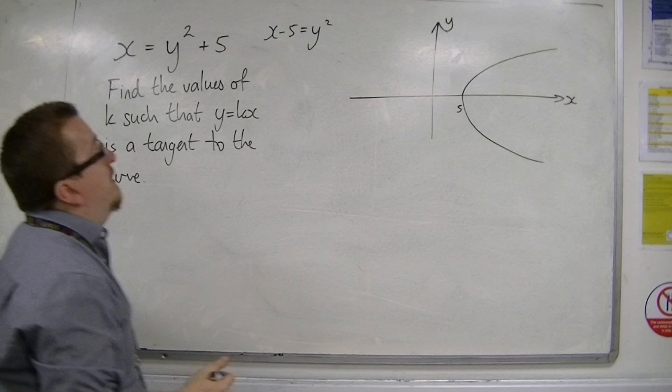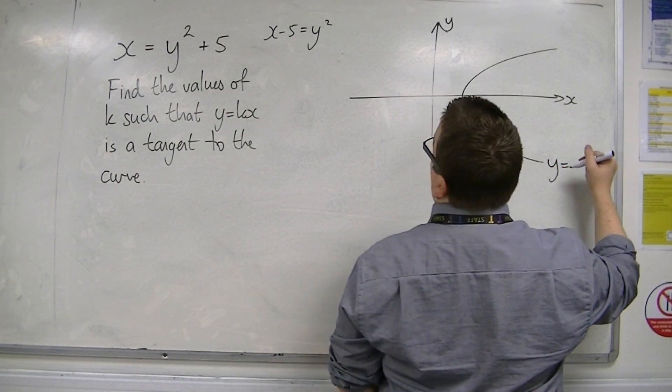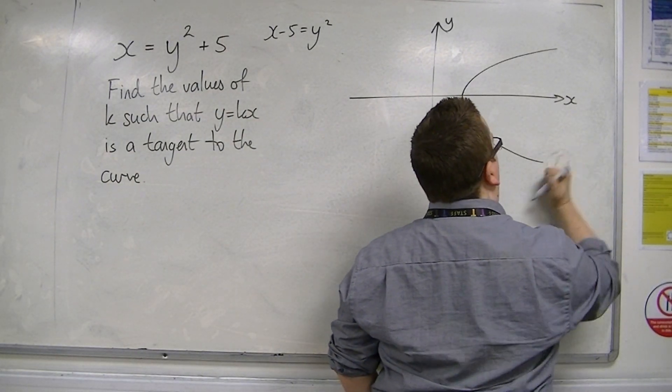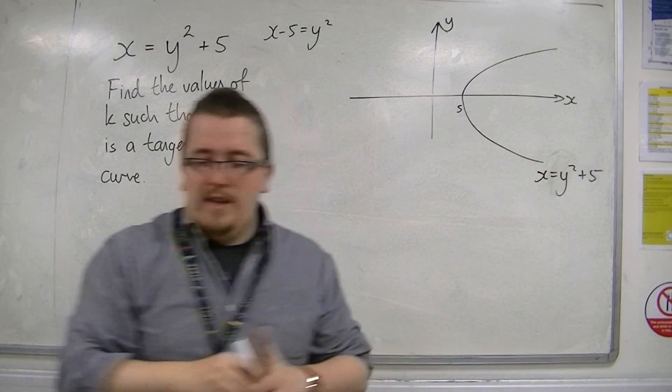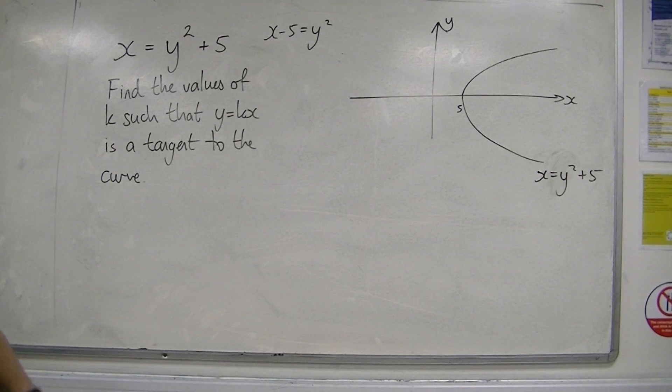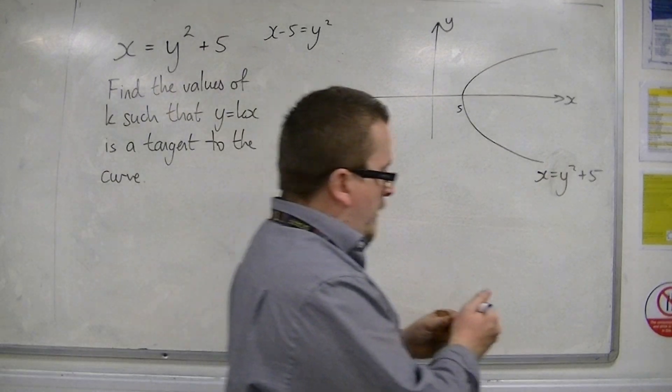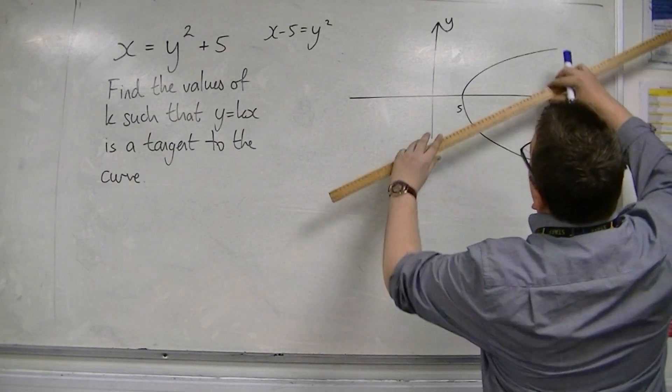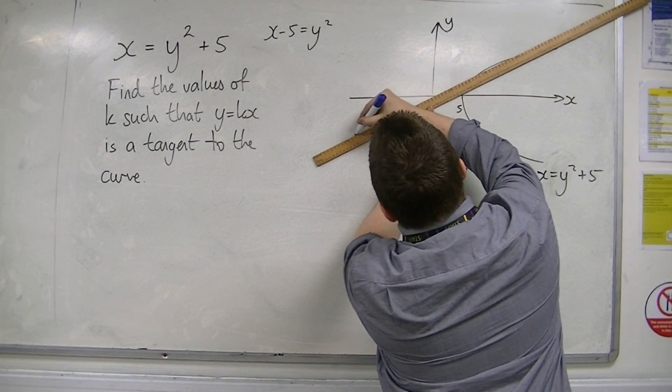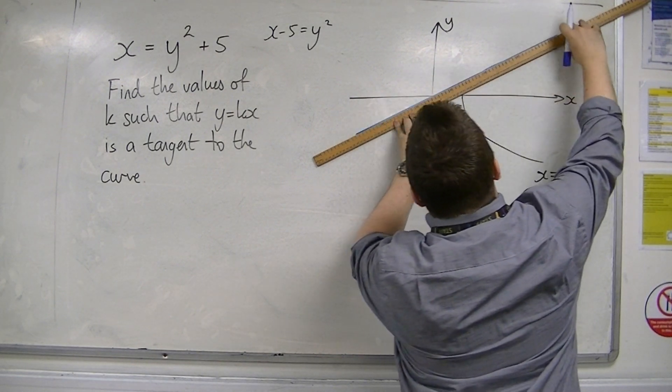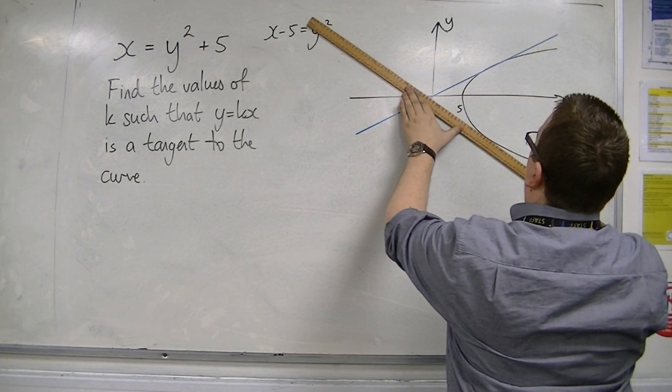So this is my curve, x is equal to y squared plus 5. Now, what we're looking at are equations y is equal to kx. So they are equations that go through the origin, and we want to find the value of k so that they are tangent to this curve.